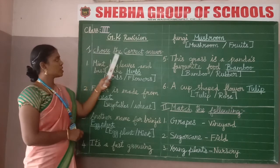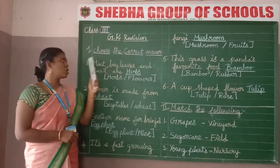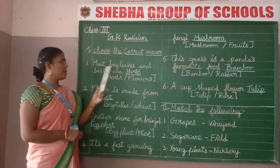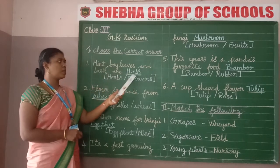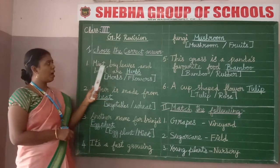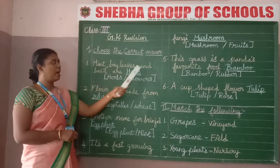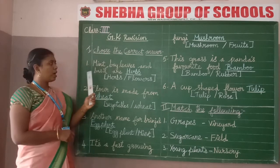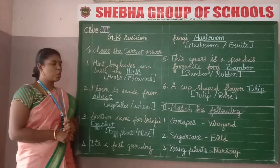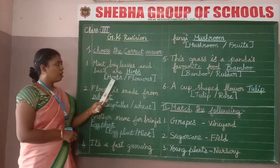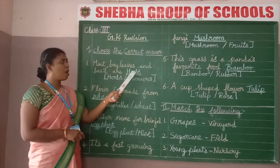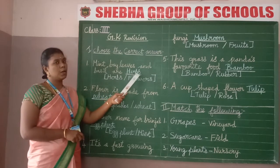Romulatum 1 — choose the correct answer. First question: mint, bay leaves, and basil are herbs. Herbs means muligayakali. Mint means pudina, bay leaves means narumna ilayakal, and basil means omam. These are all herbs. The options given are herbs and flowers, but the correct answer is herbs. Spelling of herbs: H-E-R-B-S.